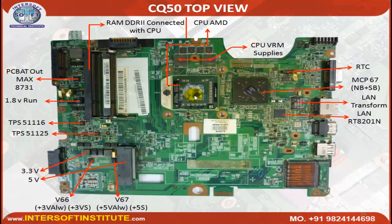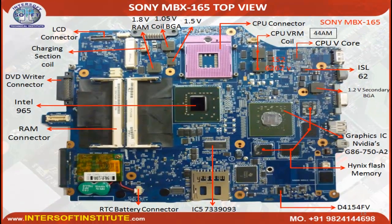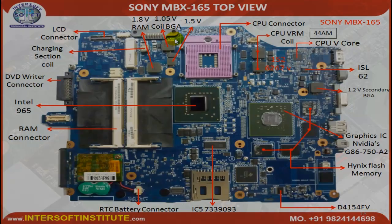RAM is connected with the CPU, and there are power sections: 1.8V, 1.5V, 3W, 5W — all the power sections are present. This is the Sony MBX-165 motherboard top view. Here also we have the CPU, Intel 965, graphic chips, additional memory, and additional graphics chips. There are also graphic memory and power regulators — where you see an inductor, that means it is a power section.